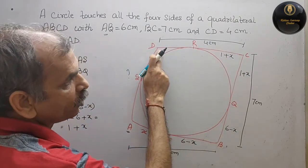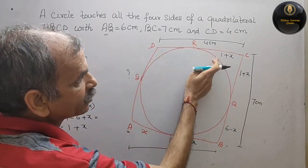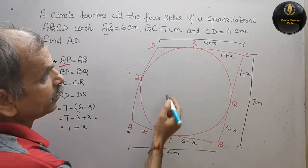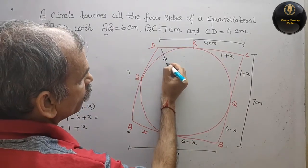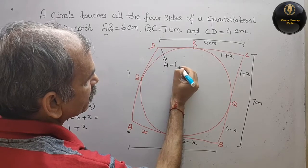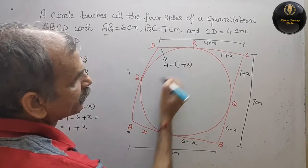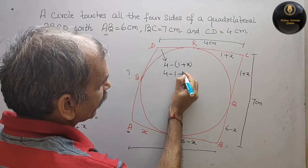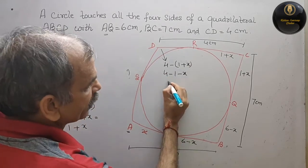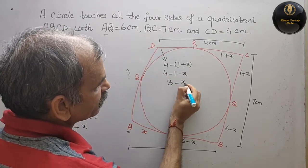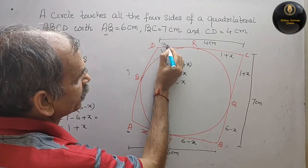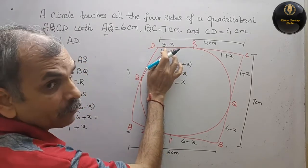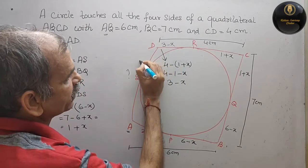So this will be 4 minus (1 plus X). So this is your 4 minus 1 plus X, that is equal to 4 minus 1 minus X. That is equal to 3 minus X. So this is your 3 minus X. If this is your 3 minus X, this is also 3 minus X.